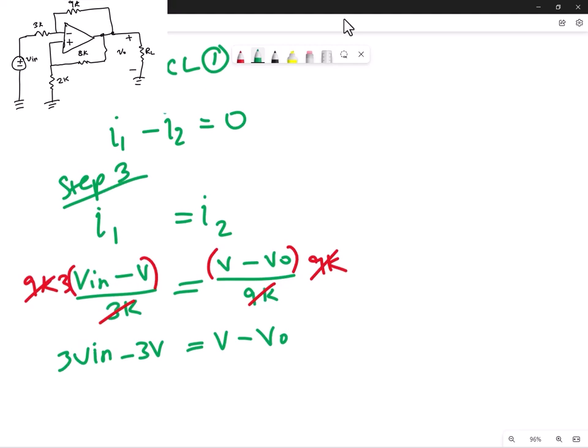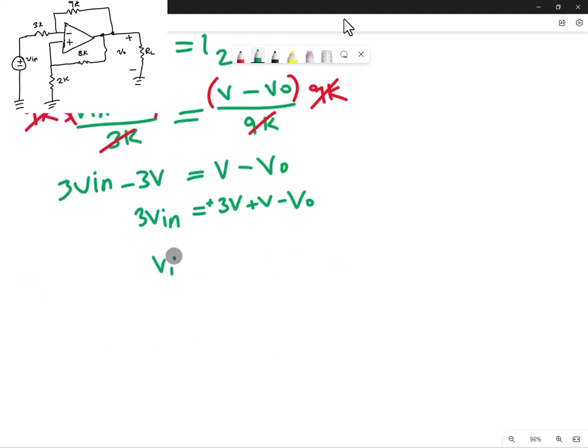Now I want to write Vin. I want to make an expression just for Vin. Okay, so I'm going to go with moving some things around. So I've got 3Vin. And if I add 3V to both sides, I've got plus 3V plus V minus VO. Next, it's Vin is equal to 3V plus 4. Well, 3V plus V is equal to 4V minus VO. Oh, don't forget the 3 on that. And then the Vin will be equal to just 4V minus VO and divide all of that by 3. So this is an expression for Vin.